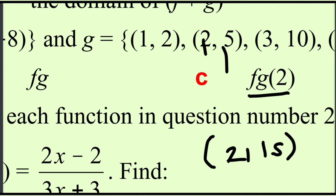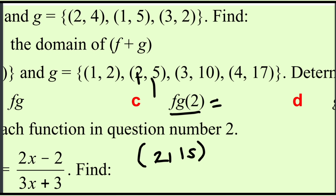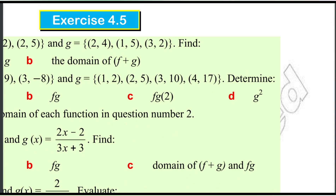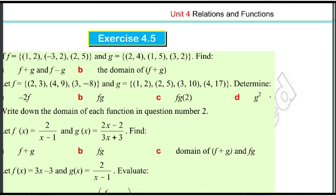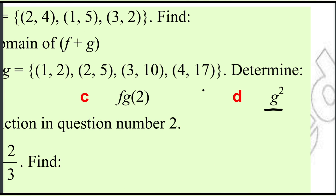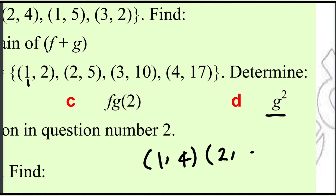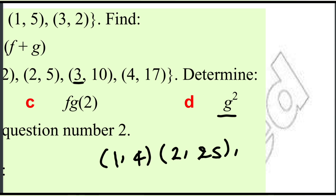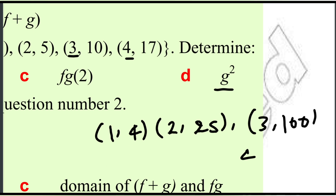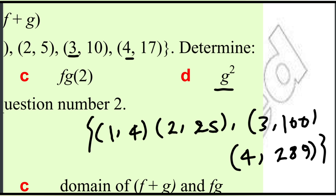F times G is equal to 2,15. 2 is equal to 2, first component. 2 is equal to 2, second component is 2,15. G is equal to 1. Component 2 is equal to 2, then 2 is equal to 4, 2 is equal to 5. First component is equal to 3. 4 is equal to 7, 4 is equal to 8. The difference is equal to 1.